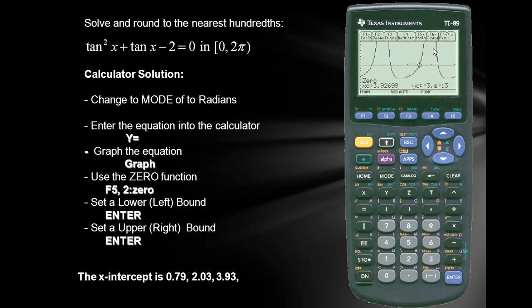We'll repeat the process for our last zero. We'll press F5. We want to use the zero function. We'll set a lower or a left bound. I'm going to set that in with enter. We'll set an upper or a right bound. I'll press enter once again. And we have a value of 5.18. Thanks for watching.